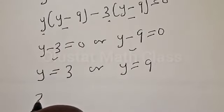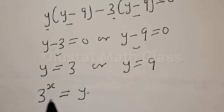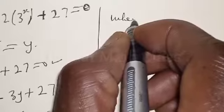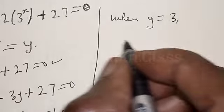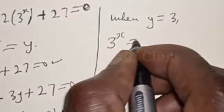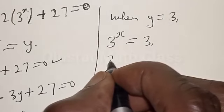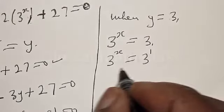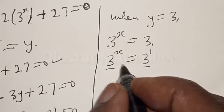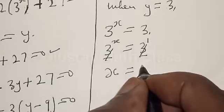Recall that we said 3 raised to the power x is equal to y. So anywhere you see y, replace it with 3 raised to the power x. When y is equal to 3, we have 3 raised to the power x equal to 3, which is the same as 3 raised to the power 1. They have the same base, so the bases cancel. Therefore x is equal to 1.